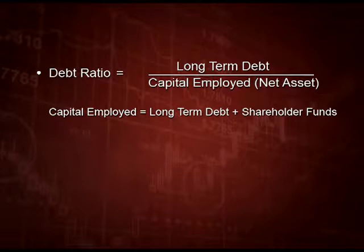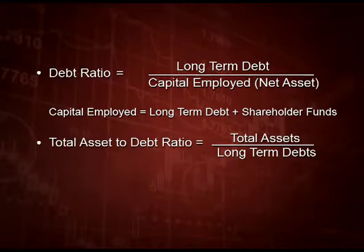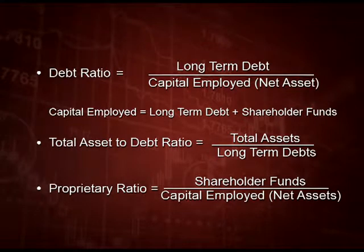The third ratio under this section is total asset to debt ratio, which is equal to total assets upon long term debts. The next ratio is proprietary ratio, which is equal to shareholder funds upon capital employed or net assets. A higher shareholder funds for financing fixed assets is always a positive sign for the company as it provides more security.